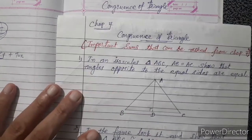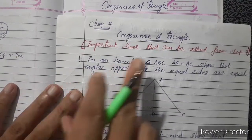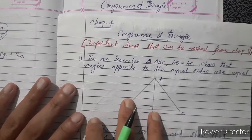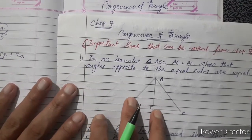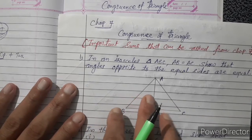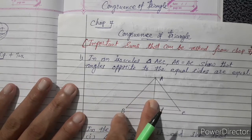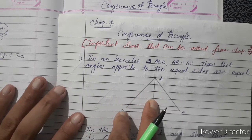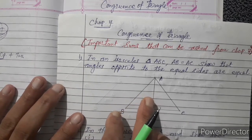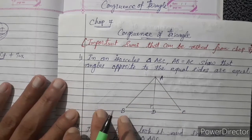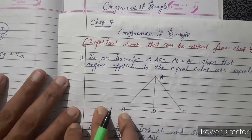Hello students. Chapter No. 7, Congruence of Triangles. Here the important sums that can be asked from this chapter in your exam are given, and we will solve them.